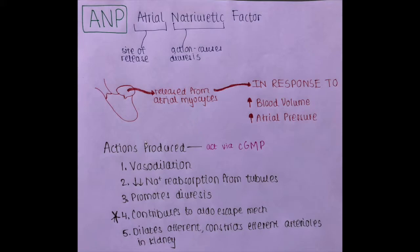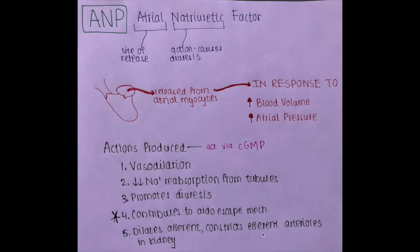The actions ANP produces are vasodilation — it dilates vessels to bring down the pressure — and it decreases sodium reabsorption from the tubules. As less sodium is reabsorbed, less water is reabsorbed, so more sodium and water are excreted, promoting diuresis. These actions contribute to the aldosterone escape mechanism. It also dilates the afferent and constricts the efferent arterioles in the kidney, all tending to decrease blood volume and pressure.